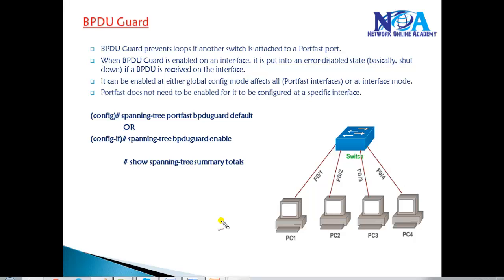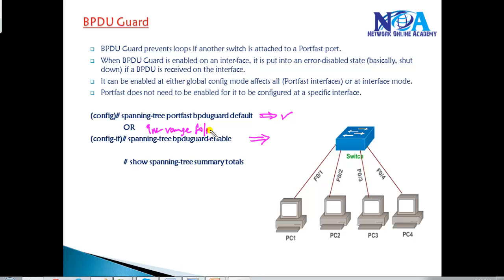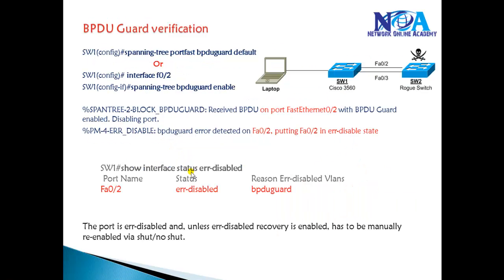To configure BPDU Guard, just like Port Fast, we can enable it globally in global configuration mode using the command 'spanning-tree portfast bpduguard default', or we can enable it on specific ports using the range command. We assume Port Fast is already enabled, so we enable Port Fast and then BPDU Guard or BPDU Filter. We can verify with specific show commands, which we'll cover in more detail in the next lab video.